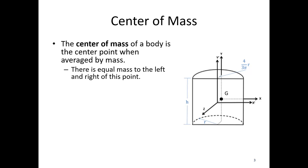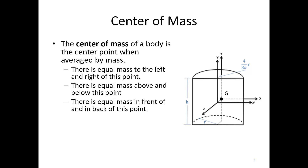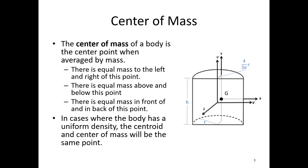There's going to be an equal mass to the left and right, equal mass above and below this point, equal mass in front of and behind at this point. In cases where the body has a uniform density — so if we've got a single material part, like it's all made of the same steel — the center of mass and centroid are going to be the same point.